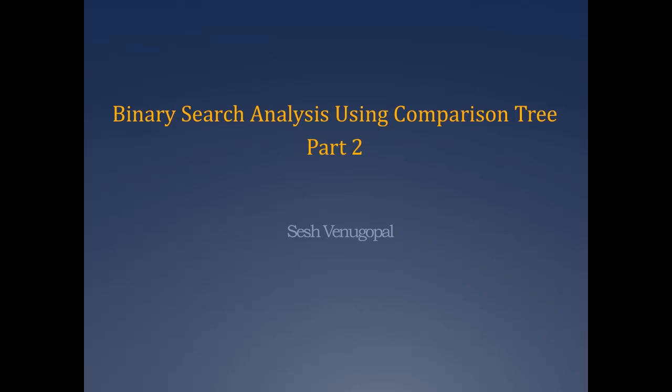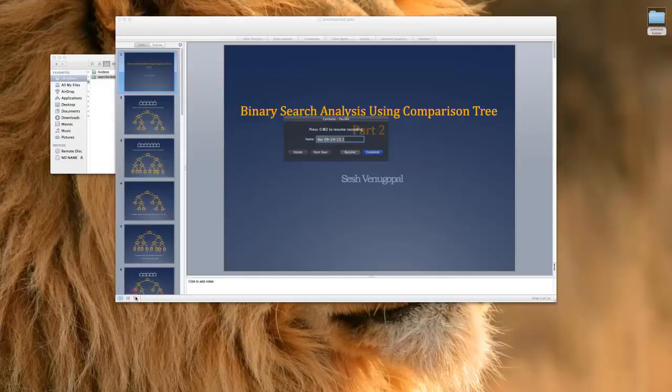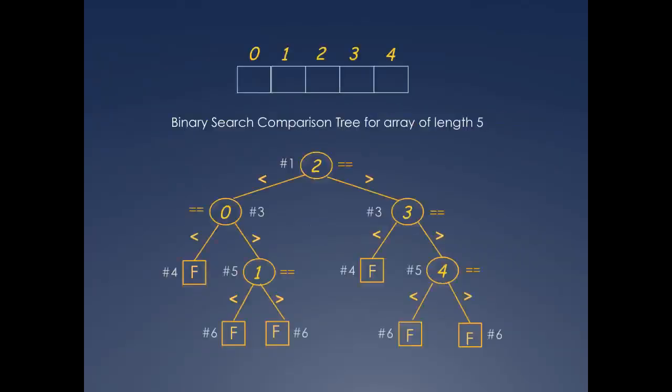Let's start with a quick review of part 1. Here's a comparison tree for binary search on an array of length 5, including the failure nodes. The number of comparisons required to find a match at any place in the array is written next to each of the success nodes.